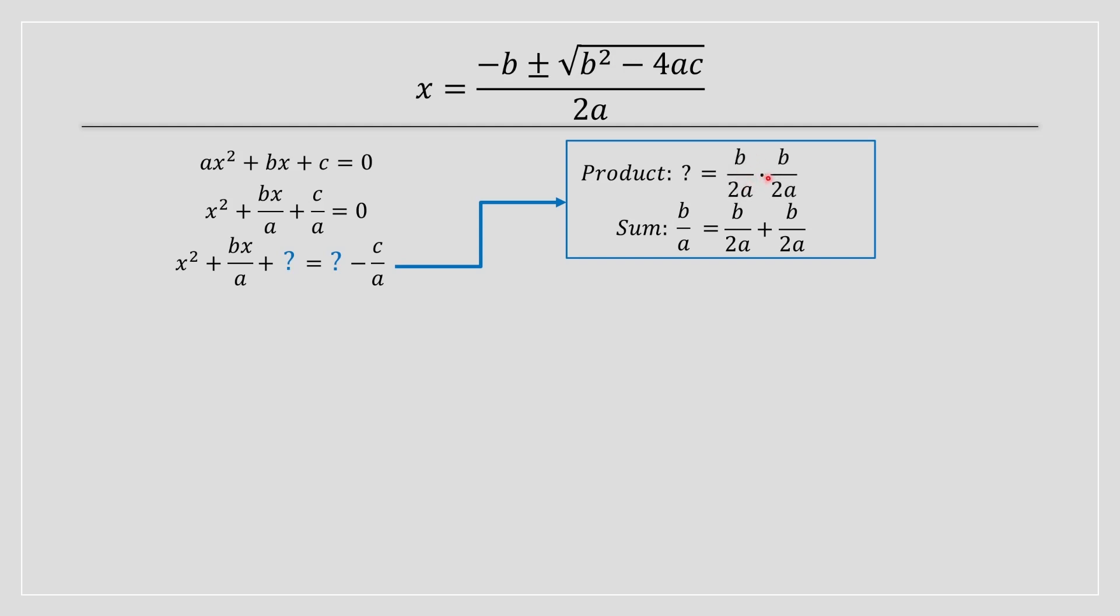When you multiply b divided by 2a with itself, you are going to have the term we're looking for, the question mark term, b squared divided by 4a squared. So you're going to take this term and substitute it in this equation, on the left-hand side and the right-hand side, respectively. These are equivalent statements.